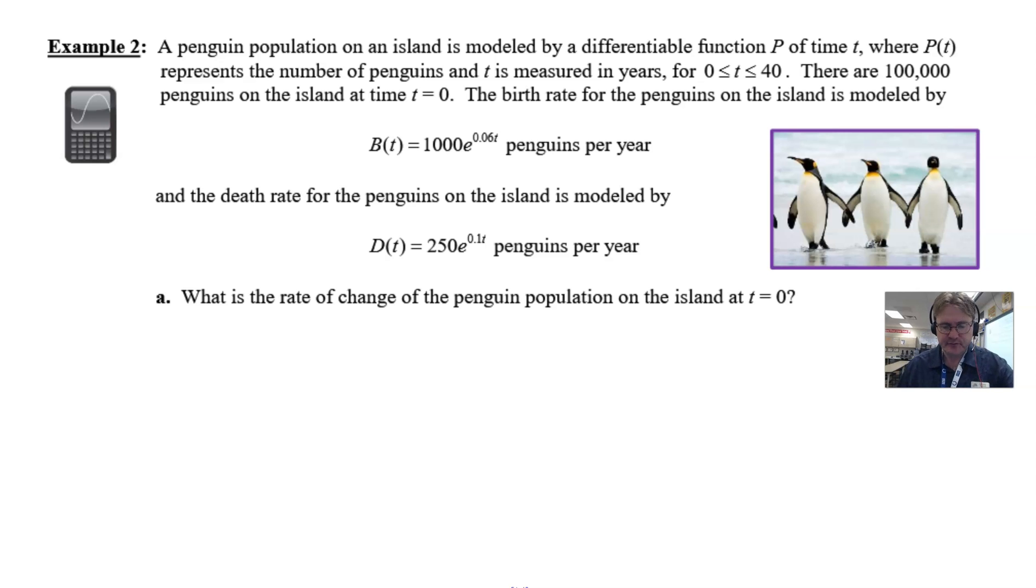So here's our example two from the notes that I provide for my students at Avon High School. Let's go ahead and read this together. It's just a mini free response question. We're only looking at part a for our purposes today. A penguin population on an island is modeled by a differentiable function P of time t, where P(t) represents the number of penguins and t is measured in years for the time interval 0 to 40 inclusively.